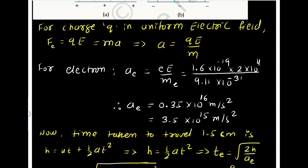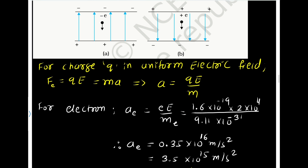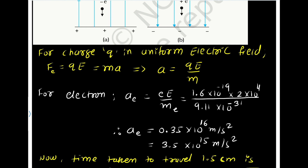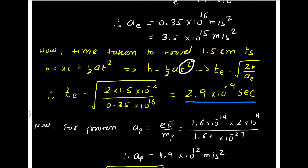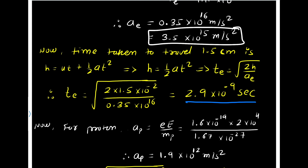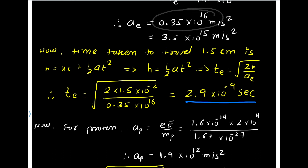Due to this acceleration, the electron will take some time to reach the other plate. For uniformly accelerated motion, we use the second equation of motion: y = ut + ½at². Since this is free fall under the electric field, u = 0, so y = ½at², giving T = √(2H/A). The distance between the plates is 1.5 cm = 1.5×10⁻² m, and the acceleration is 3.5×10¹⁵. On solving, we get T = 2.9×10⁻⁹ seconds — the electron takes 2.9 nanoseconds to travel 1.5 centimeter.